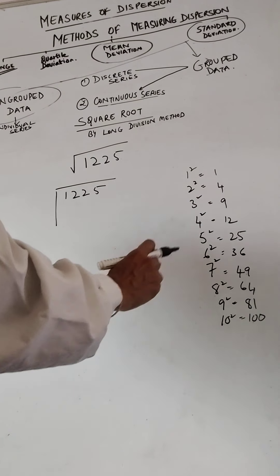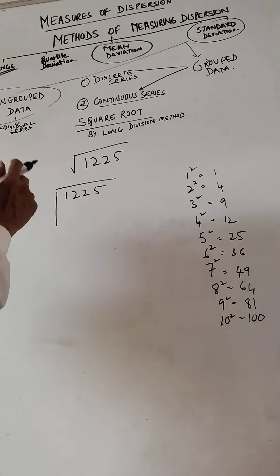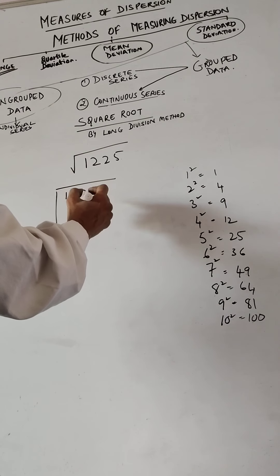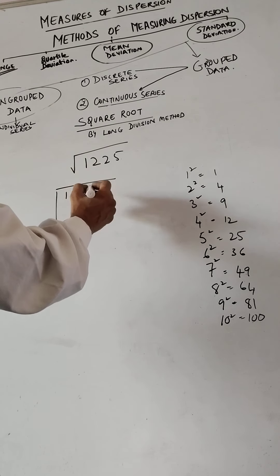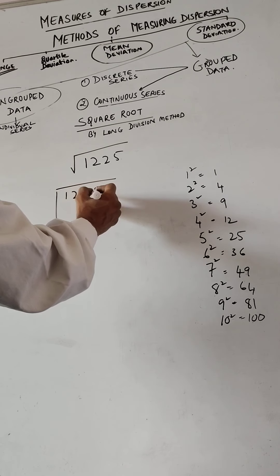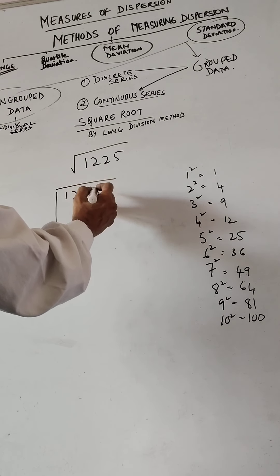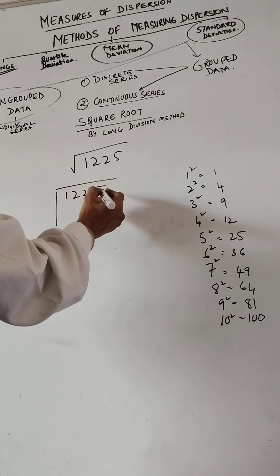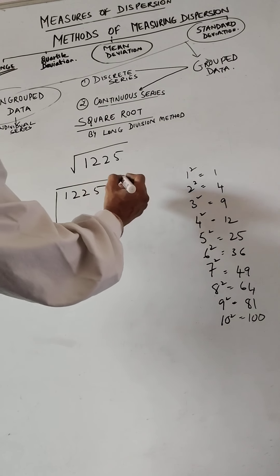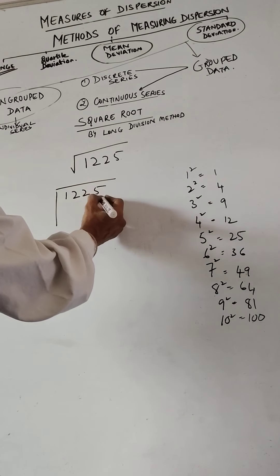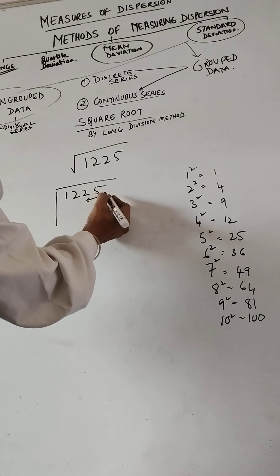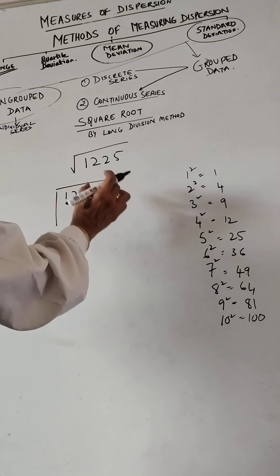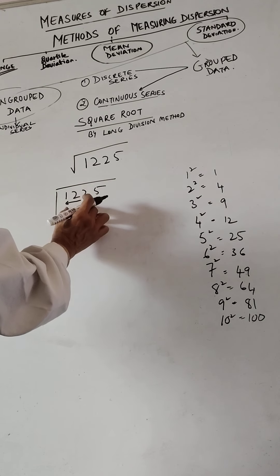Now the important thing when doing the long division method: you must pair the digits. Pairing means groups of two. We move from the right-hand side to the left-hand side. So this becomes one pair, and this becomes another pair.